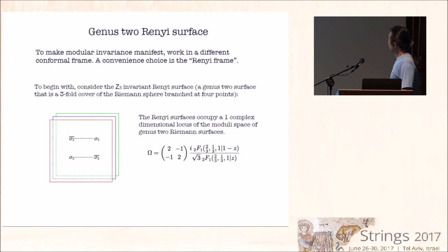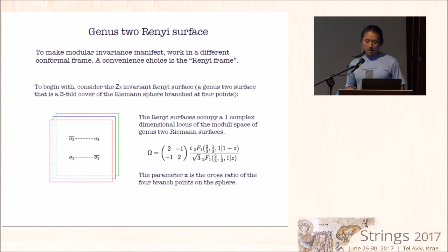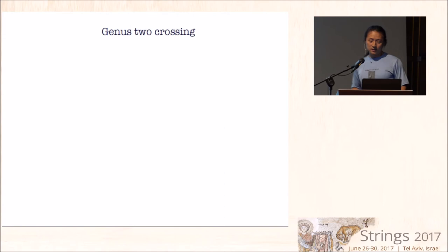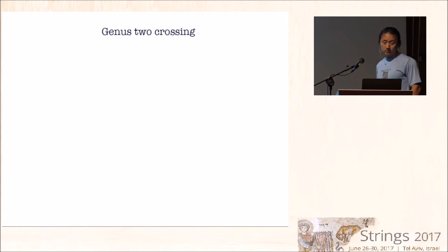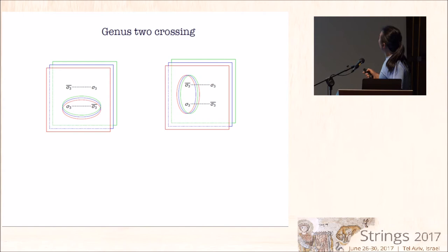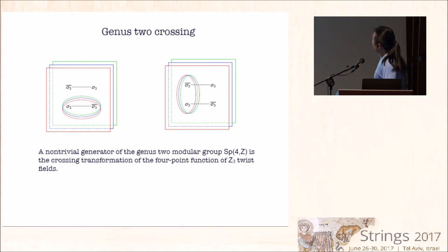This Z3 invariant surface is of course somewhat special. It occupies a one-complex dimensional locus in the three-complex dimensional moduli space of the genus two surfaces. The period matrix has some explicit formula in terms of the cross ratio of the four points. This cross ratio Z of the four operators is a parameter here. So now there's an obvious kind of crossing relation where you consider OPE of these two versus OPE of these two and look at the decomposition in two conformal blocks. These conformal blocks are now genus two conformal blocks. A non-trivial generator of the genus two modular group SP(4,Z) is precisely this crossing transformation going between these two different OPE channels of the Z3 twist fields.